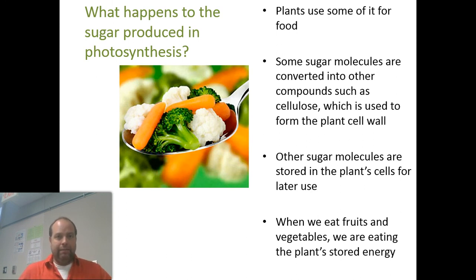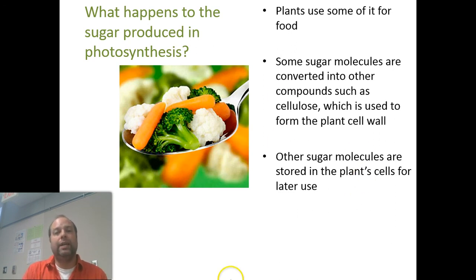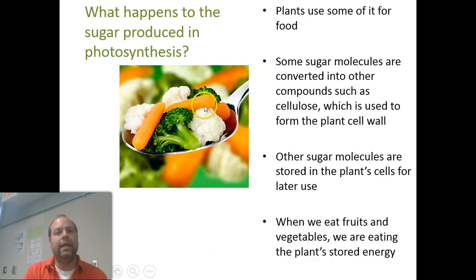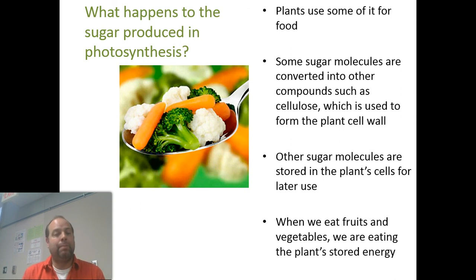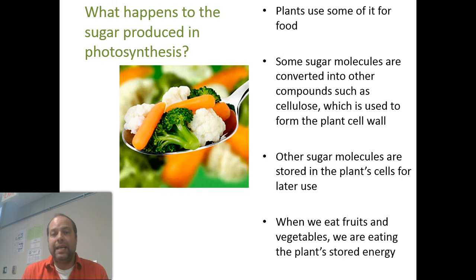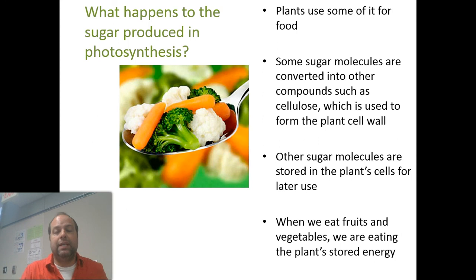Plants also store food. Just as Mr. Knox stores energy in the form of fat, plants store their energy in their roots. Carrots are an example of stored food for a plant. Potatoes are another excellent example — if your mom bought potatoes, forgot them in a dark cabinet for a week or two, you'd see them start to grow. That's because the potato is stored food for the plant, relying on that starch to start growing roots and stems.